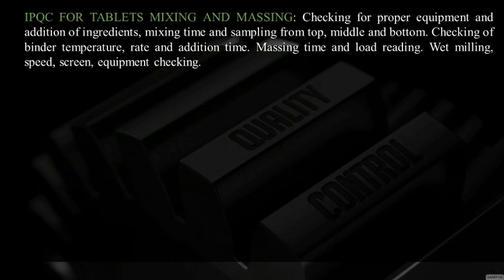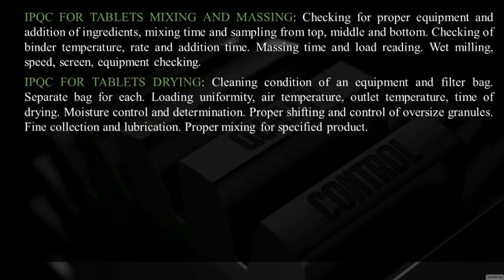IPQC for tablet mixing and massing — checking for proper equipment and addition of ingredients, mixing time, and sampling from the top, middle, and bottom. After mixing, sampling is very important to confirm that the API is distributed completely in the powder blend. Checking for binder temperature, rate and addition time, massing time, load reading, wet milling speed, screen, and equipment must be done during manufacturing to produce a quality product free from defects.